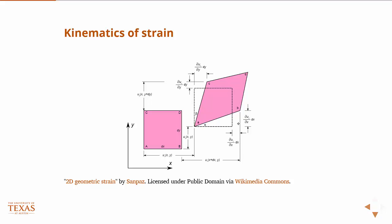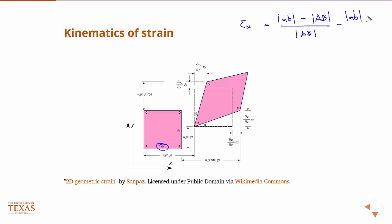That would be the length of the line segment AB — the length of the line segment AB minus the length of the line segment AB capital, over AB capital. That's our definition following engineering strain. As you can see here, the length of capital AB is dx, so this is some infinitesimally small square. So I can rewrite this as AB minus dx over dx, and that's equal to AB minus 1.